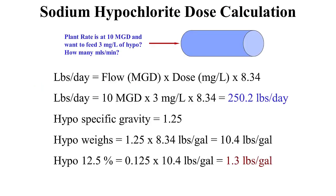Here's another example for feeding sodium hypochlorite, or hypo, at a dose of 3 milligrams per liter at a plant operating at 10 million gallons per day. We follow the same procedure as the alum calculation: pounds per day equals flow in MGD times mg/L times 8.34, and we get a feed rate of 250 pounds per day. But since we are using a different chemical, the mL per minute feed rate will be different. This hypo has a specific gravity of 1.25, and multiplying by 8.34, a gallon of hypo weighs about 10.4 pounds per gallon. The hypo is 12.5%, so 0.125 times 10.4 shows that the active ingredient is 1.3 pounds per gallon.